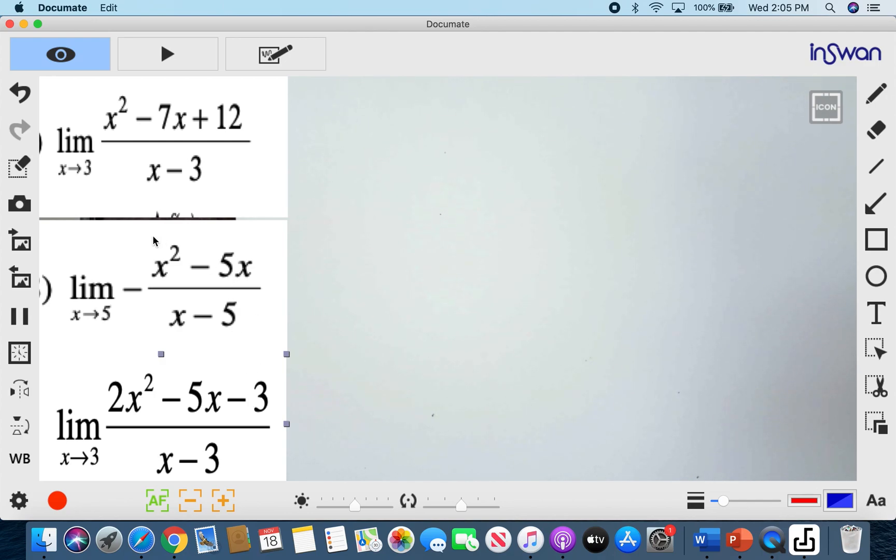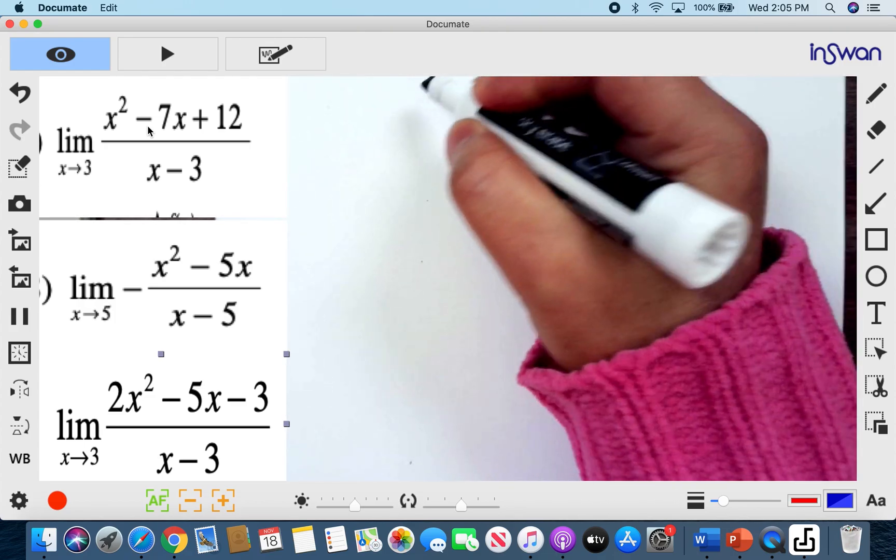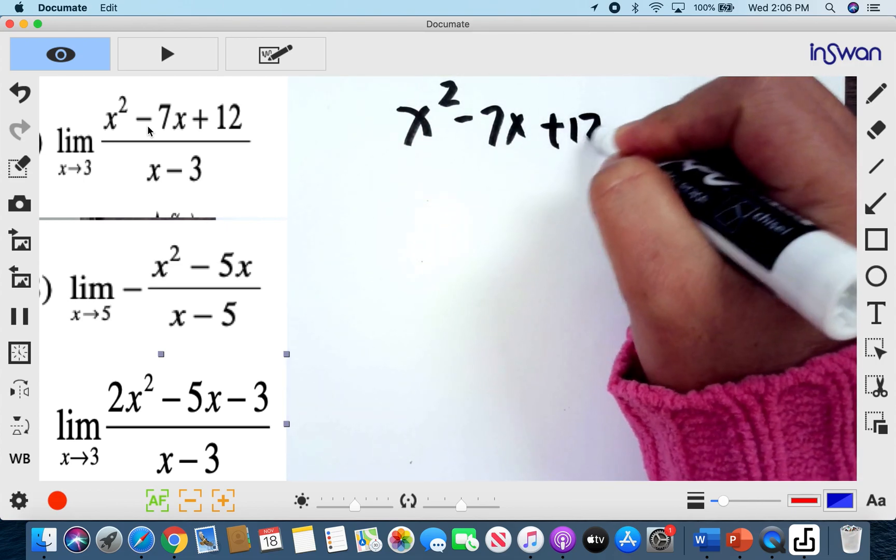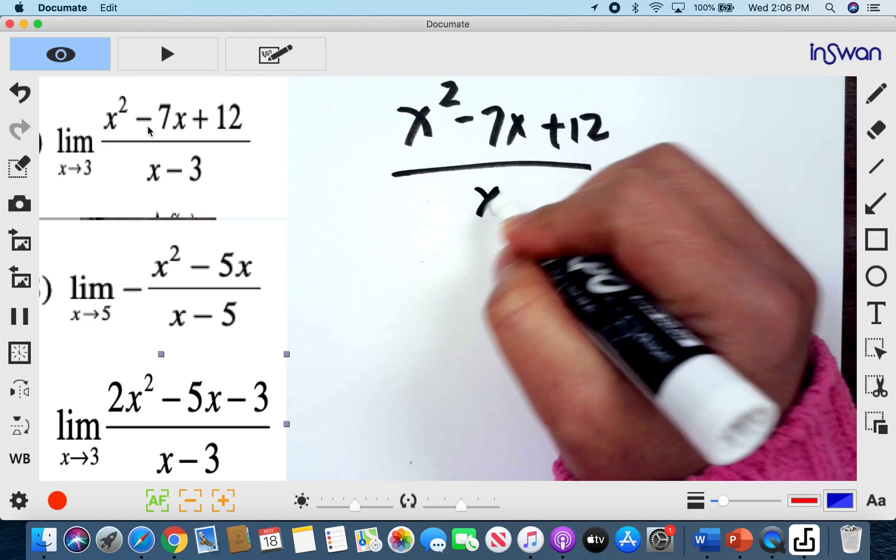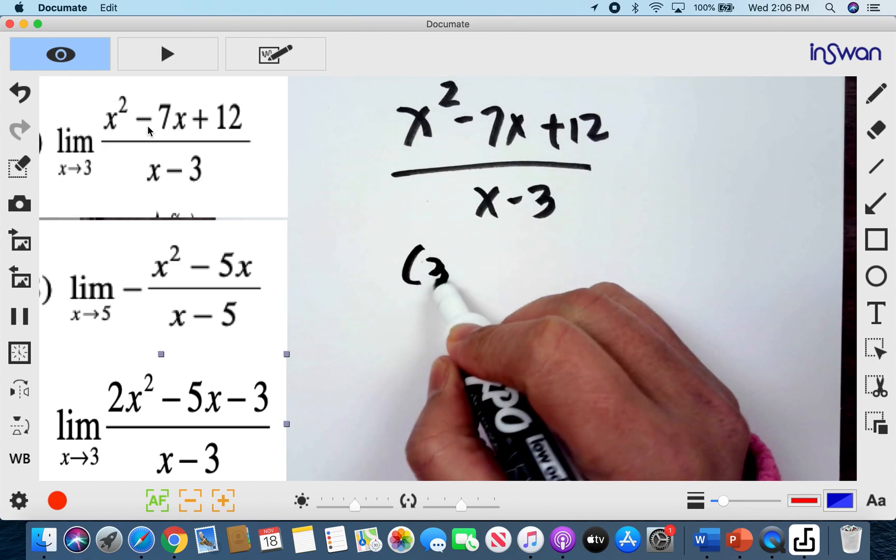And then after that, plug in back. So let's go first with the first example. You have the limit of x squared minus 7x plus 12 over x minus 3 as x is approaching positive 3. Now this is still coming from the left and right since it doesn't say that it is a one-sided limit. So the first thing is we plug in 3.